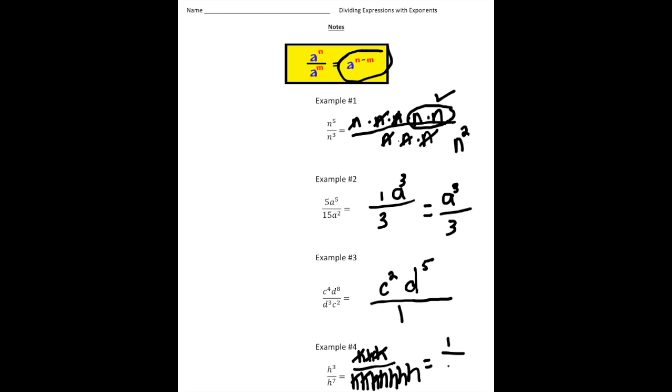Last but not least, example number 4: we have h to the third over h to the seventh. If I draw this out, it's going to be h times h times h over 7 h's. These will cancel out, so we're going to have 1 on top and 4 more h's left on the bottom. So it's going to be 1 over h to the fourth as the simplified expression.